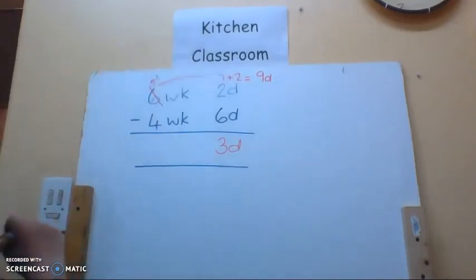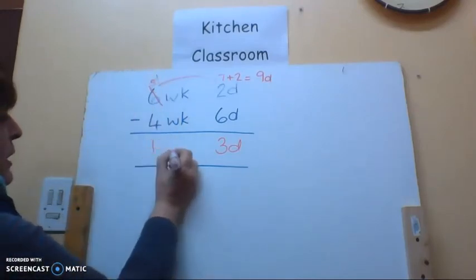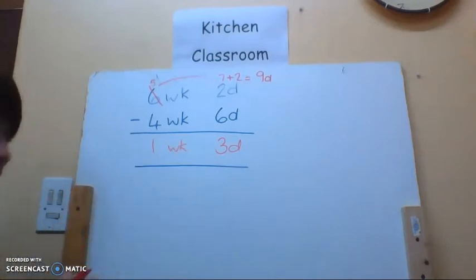Then I go over to my weeks column and what I see there, I've got five weeks minus four weeks is one week. So my answer is one week and three days.